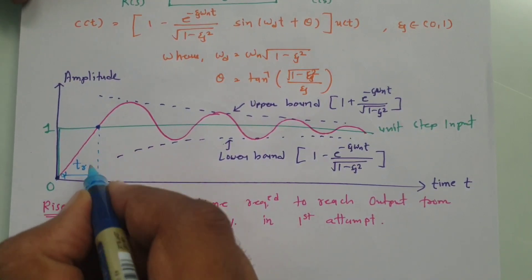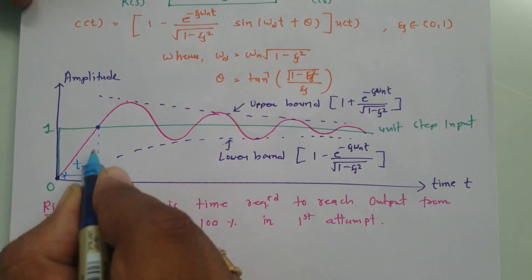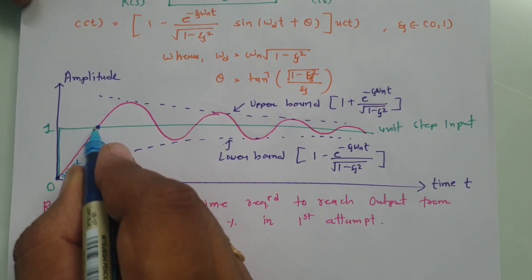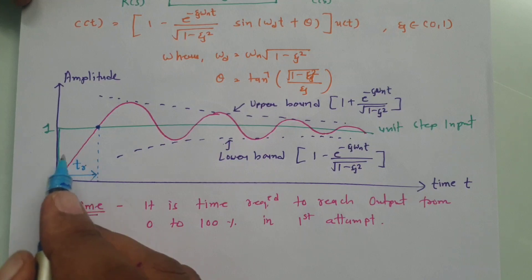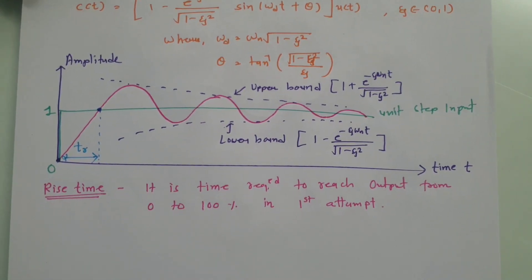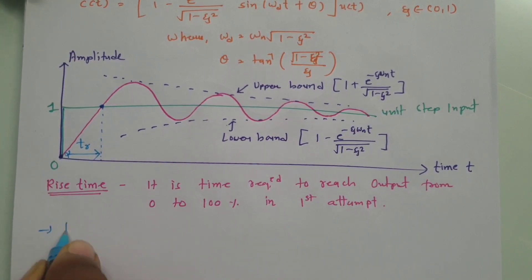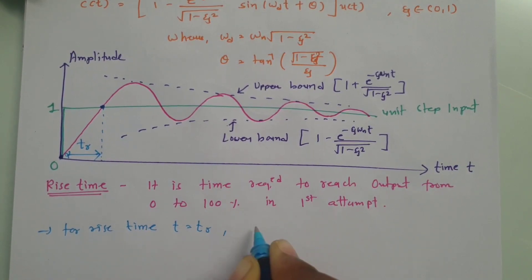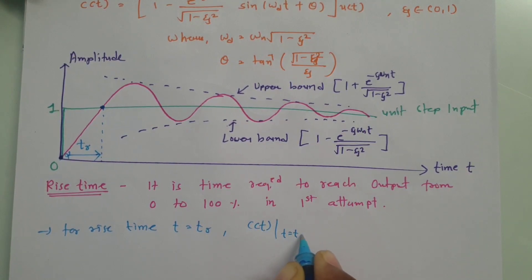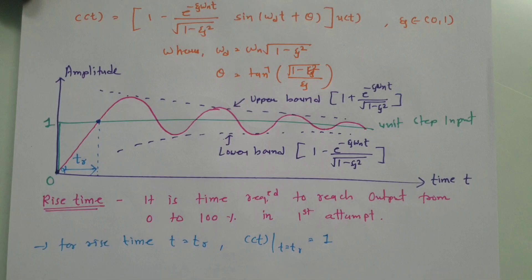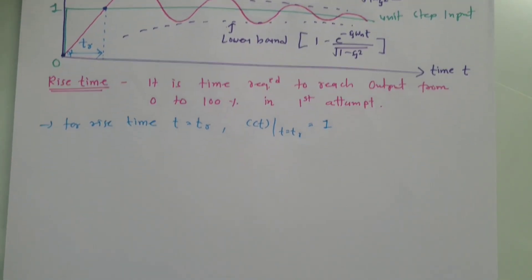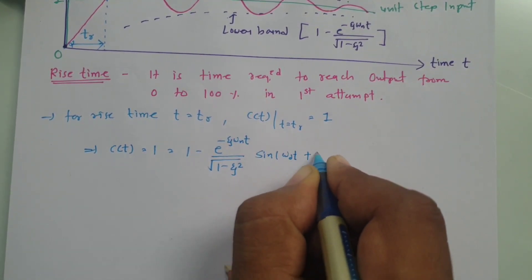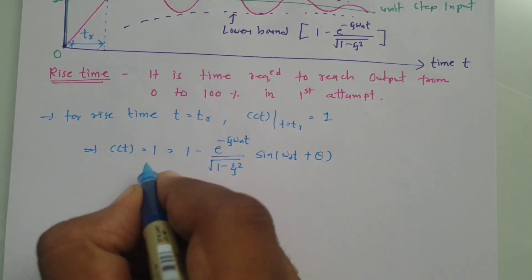When rise time t_r occurs, our output C(t) becomes 1. In the first attempt, whatever time is required is the rise time. So we set C(t) = 1 at t = t_r, and then solve to identify the rise time.